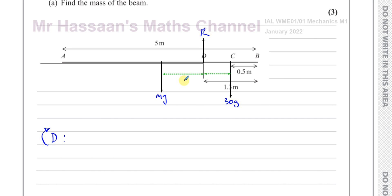The whole length of the beam is five metres, and the weight of the beam acts at 2.5 metres from either end. The distance from where the beam's weight acts to point D is 2.5 minus 1.3, which gives 1.2 metres. For the boy standing at C, the distance from C to D is 1.3 minus 0.5, which is 0.8 metres.